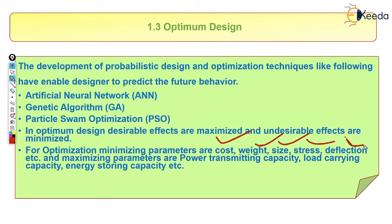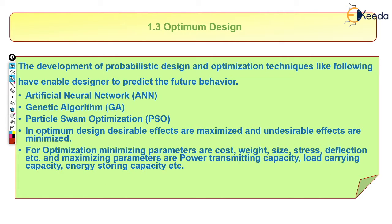For optimization, the minimization parameters are cost, weight, size, stress, and deflection. The maximization parameters are power transmitting capacity, load carrying capacity, and energy storing capacity. We can minimize weight by using different materials, minimize stress acting on the frame, minimize deflection, and minimize cost. Using these methods and software, we determine which is the best design.